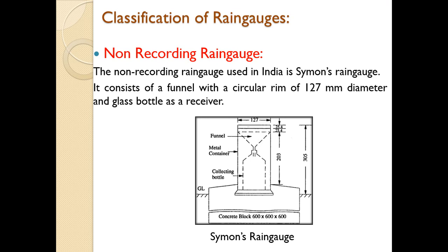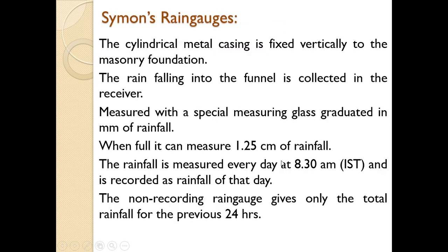In its simplest form it consists of a funnel provided with a circular rim of 127 mm diameter, and just below it a glass bottle as a receiver. This is the outer casing. The complete assembly is embedded into a concrete block of 600 by 600 by 600 mm. The depth is 203 mm from the base and the total depth above ground level is 305 mm.